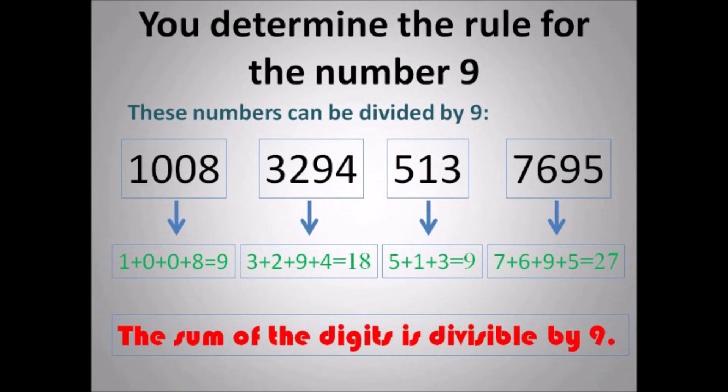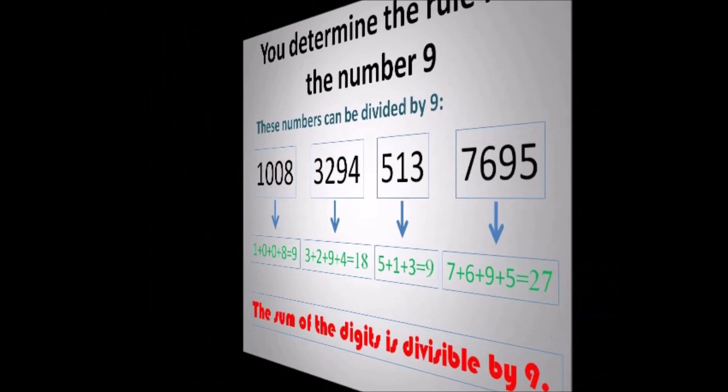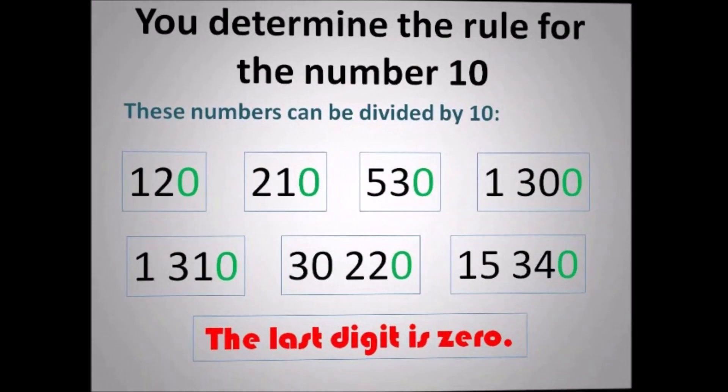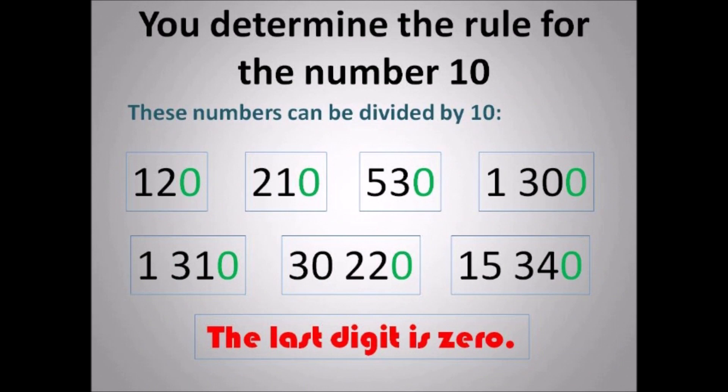And for 9, the sum of the digits is divisible by 9. So add up the digits: 1 plus 0 plus 0 plus 8 is 9. 3 plus 2 plus 9 plus 4 is 18 — that's a multiple of 9. 5 plus 1 plus 3 is 9. And 7 plus 6 plus 9 plus 5 is 27 — that's a multiple of 9. So once you add the digits and get a multiple of 9, it can be divisible by 9.